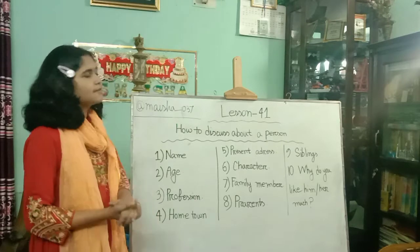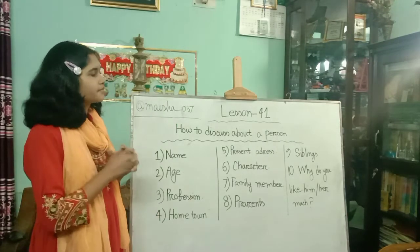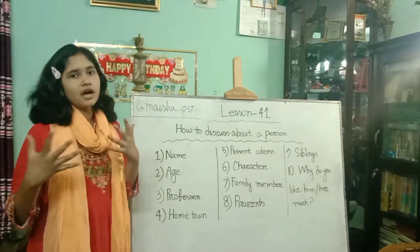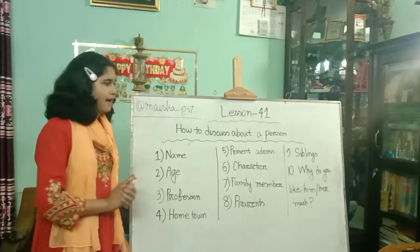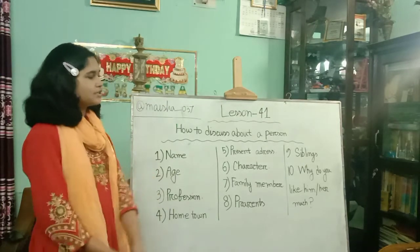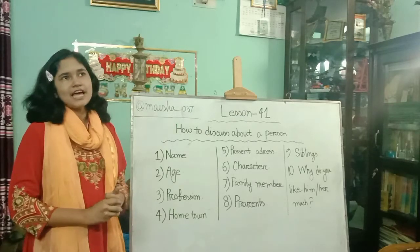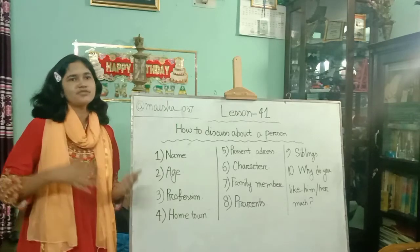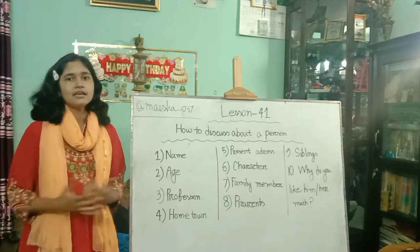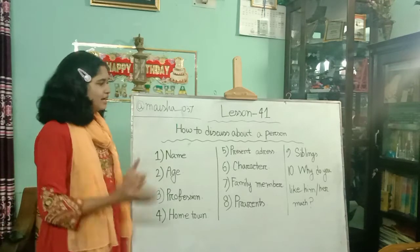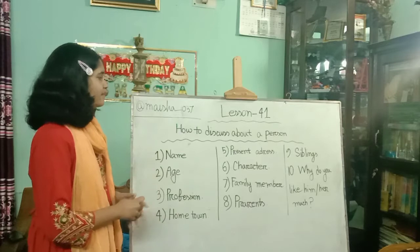And then siblings — for siblings, you can add here about how many brothers or sisters she or he has. And then why do you like him or her? You can say like 'My friend is very much honest and she is really friendly, for that I like him or her very much.'